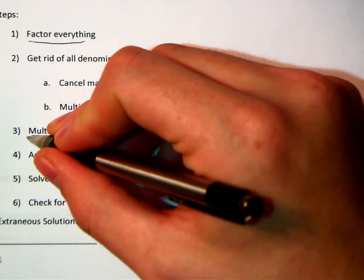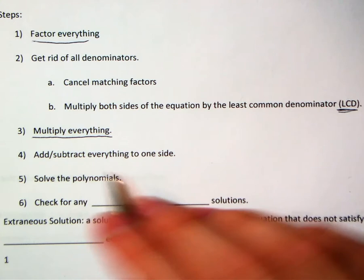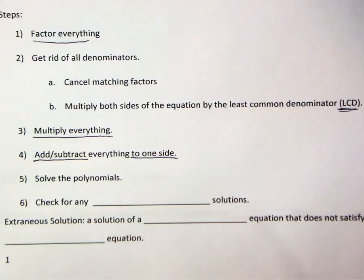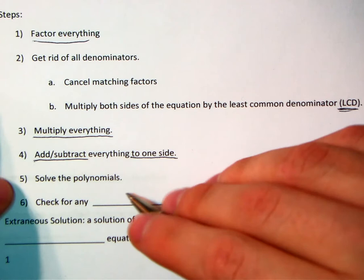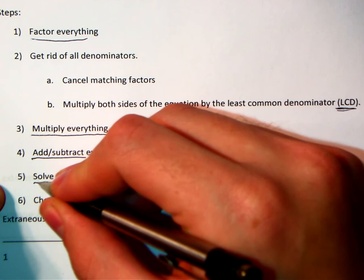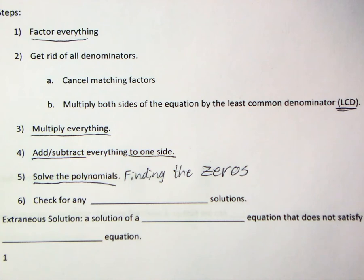After we do that, we want to multiply everything together — sometimes there's nothing to multiply, but sometimes there is. After that, we've basically got a bunch of algebraic terms separated by pluses and minuses, and we want to get all of those to one side of the equal sign by adding and subtracting. Fifth, after we've done all that, we're going to have a zero on one side because everything else is on the other side — basically a polynomial equal to zero. We can solve that by finding the zeros, which is something we already know how to do from last test.